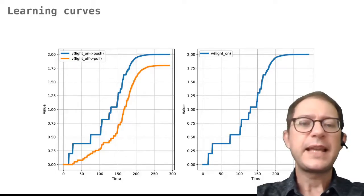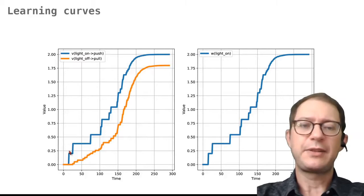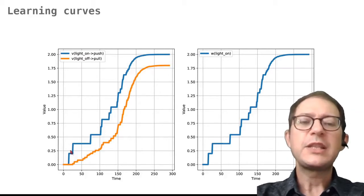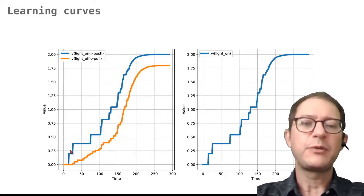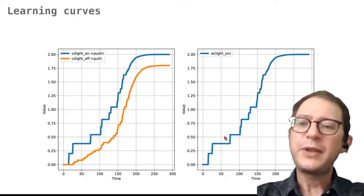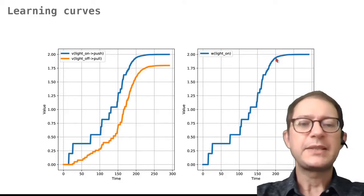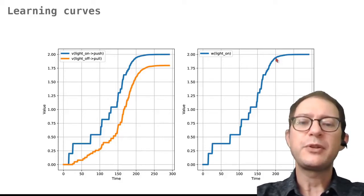This second graph instead shows what happens with conditioned reinforcement. The left part of the graph shows the associative strength of the first and second actions. The second action — pushing when the light is on — is learned first, because at the beginning only this action is rewarded by the actual value of the food. But as this action is rewarded, the light on also gains conditioned value, as shown in the right part of the figure that plots the value of the light on. This happens because the light starts to be followed by food as the animal learns the second action.